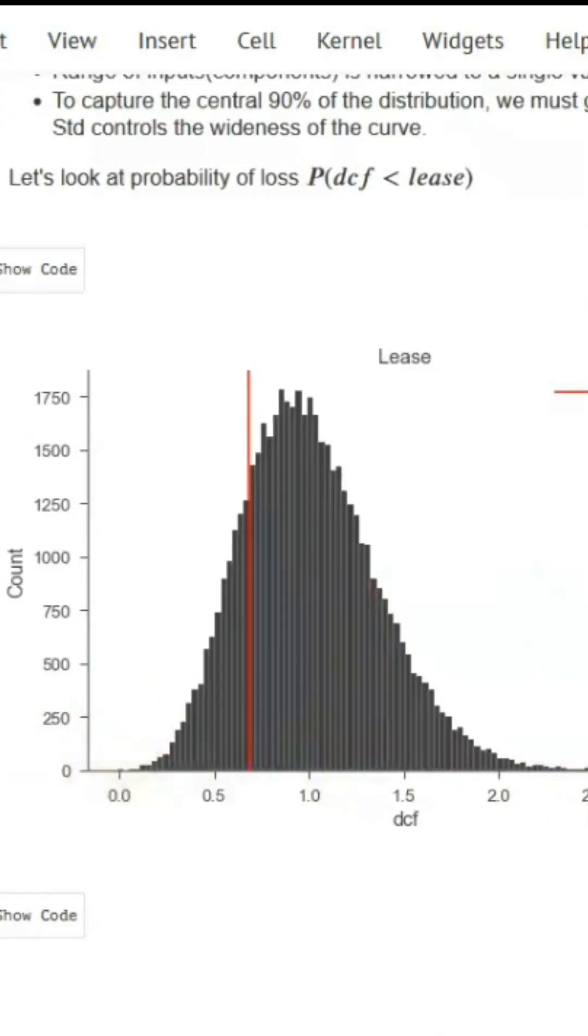On the x-axis, we have all the discounted cash flows, and on the y-axis, we have the counts of the occurrence of each of these cash flows. The red line represents the value of the lease. You can say that there is an 18% chance of losing money because this area here amounts to 18%.